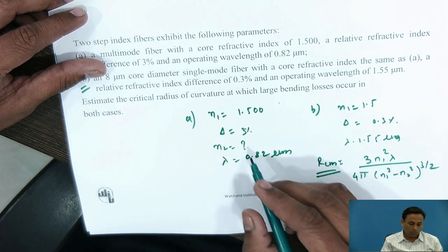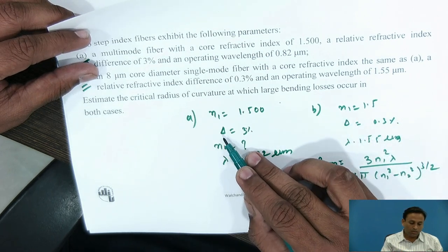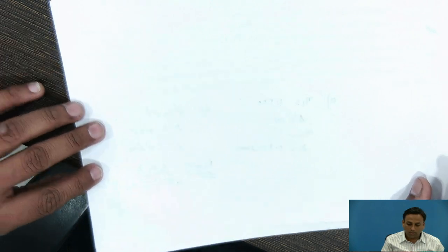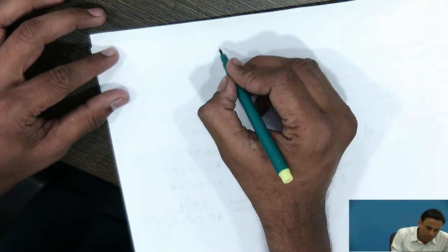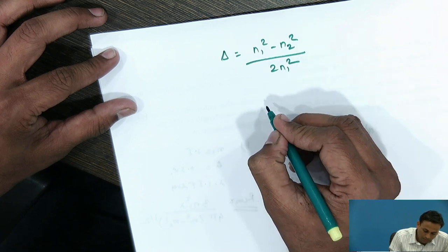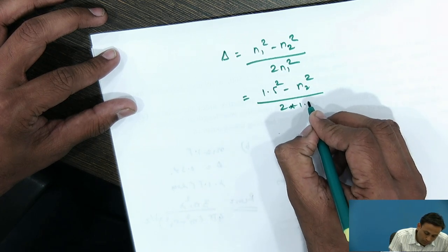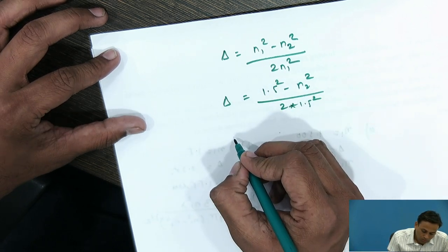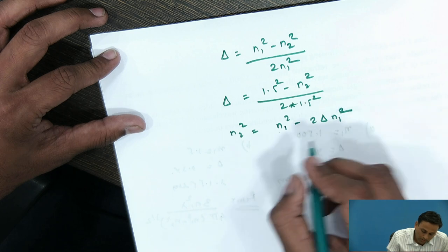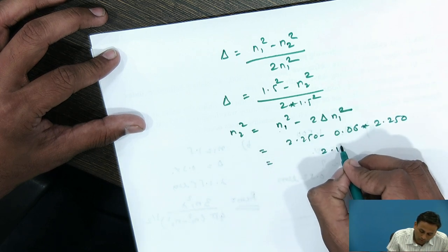Before substituting values into the RCM equation, we must calculate N2. The relative refractive index is given as Δ = (N1² − N2²) / (2·N1²). Substituting Δ = 0.03 and N1 = 1.5: N2² = N1² − 2·Δ·N1² = 2.25 − 2×0.03×2.25 = 2.25 − 0.135 = 2.115, which gives N2 ≈ 1.454. The difference N1² − N2² = 0.135.